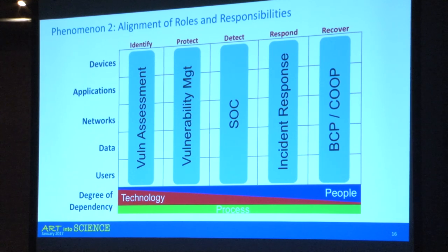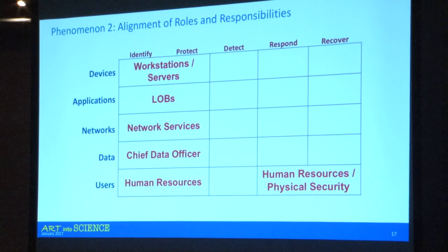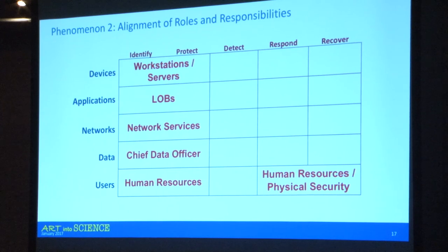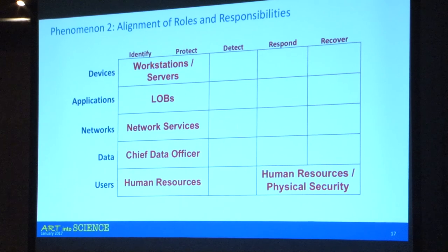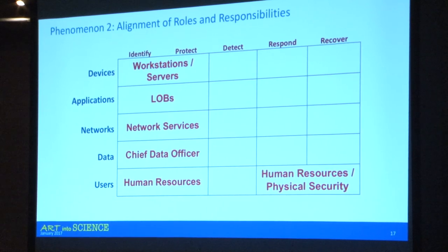In terms of alignment of roles, there are various security functions: vulnerability assessments, vulnerability management, SOC, incident response, and BCP/COOP. The model tells us where we have gaps. For example, the SOC has traditionally looked at devices and networks — but should it also cover insider activities? And who runs phishing awareness training? Currently security runs it, but training and awareness is really an HR function. Should HR run it instead, informed by information security? Thinking more broadly about these domains beyond what we traditionally do reveals potential gaps.